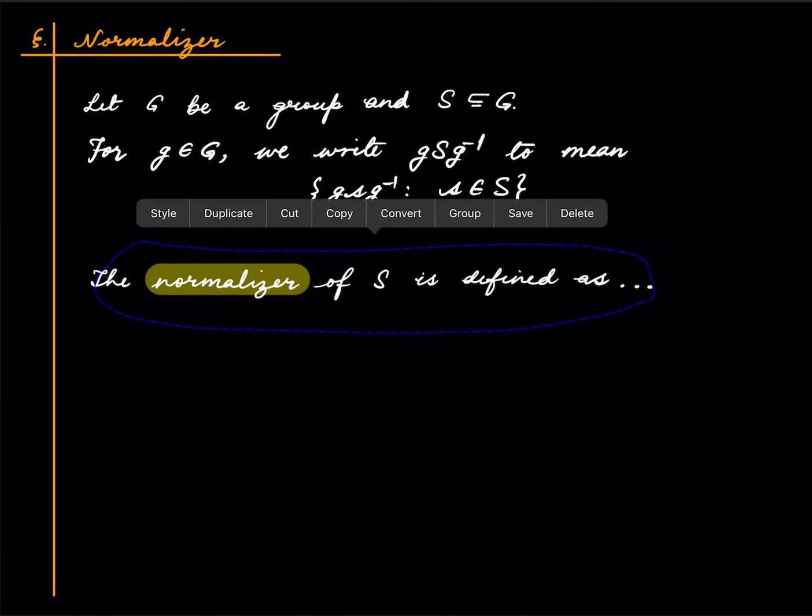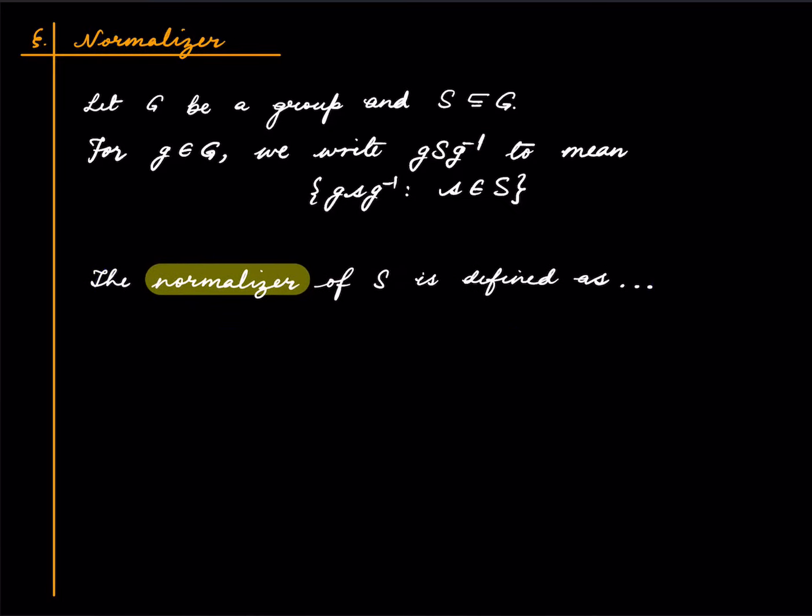And now we can define the normalizer. So the normalizer of S is defined as those things in the group which do not necessarily commute with everything in S but keep the set fixed. You can also express this in this fashion which will make the connection with centralizers clearer.